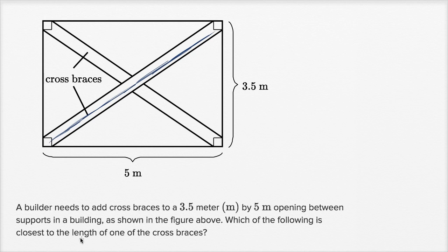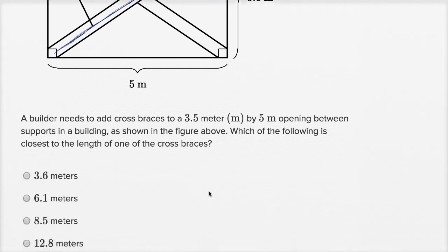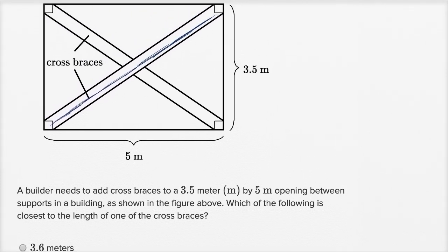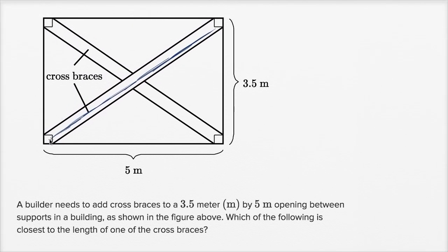Which of the following is closest to the length of one of the cross braces? They give us four options here. Let's look at this.